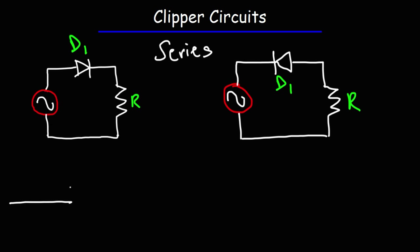Now let's talk about what happens on the series clipper circuit on the left. During the positive half cycle, this is going to be positive and this is going to be negative. Conventional current will flow from the positive side through D1, so D1 is going to be on, and then through the resistor. During the negative half portion, current will try to flow in the opposite direction, but the diode will prevent it. The diode will be in reverse bias mode, so it's going to be off. The diode allows current to flow in one direction but blocks current from flowing in the other direction.